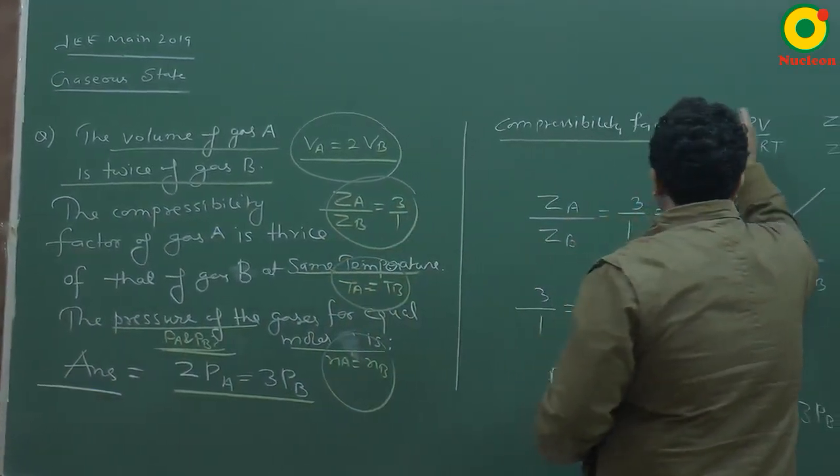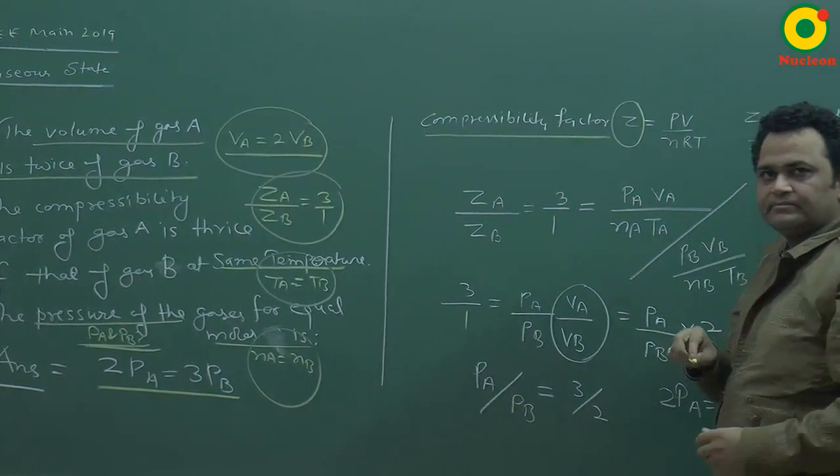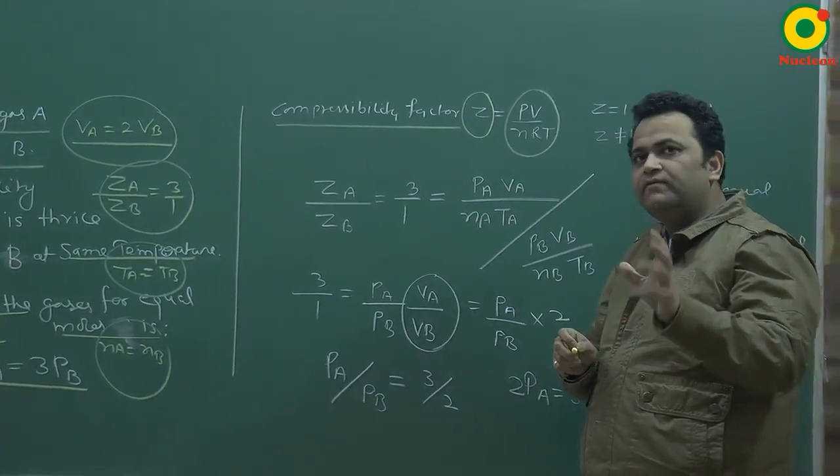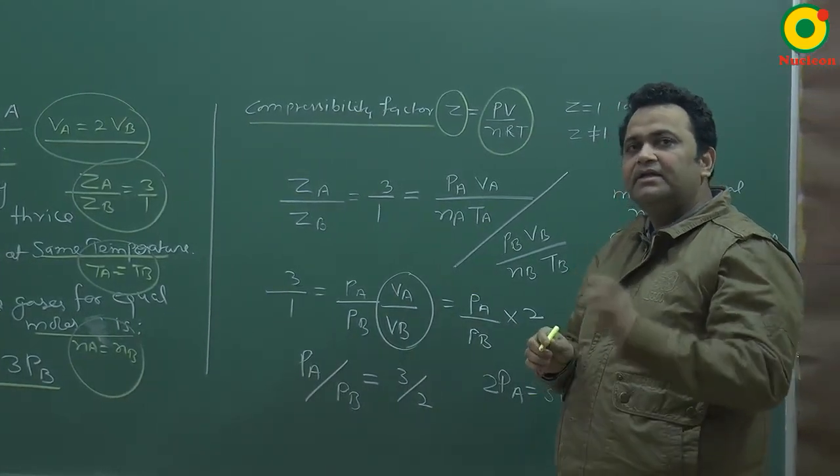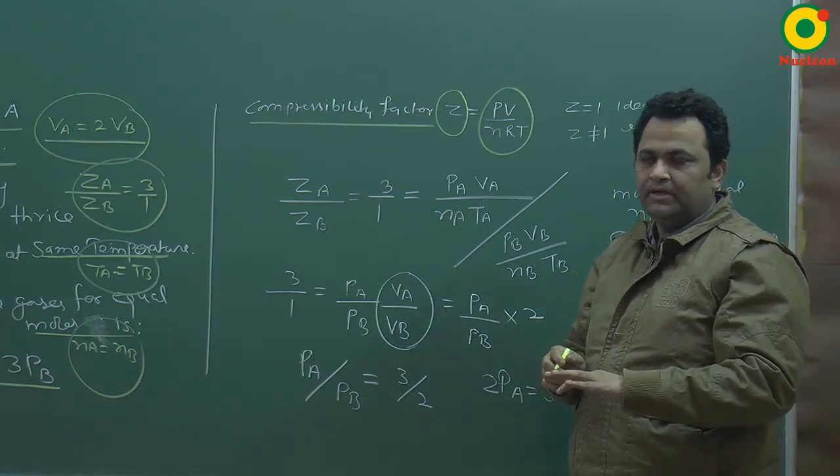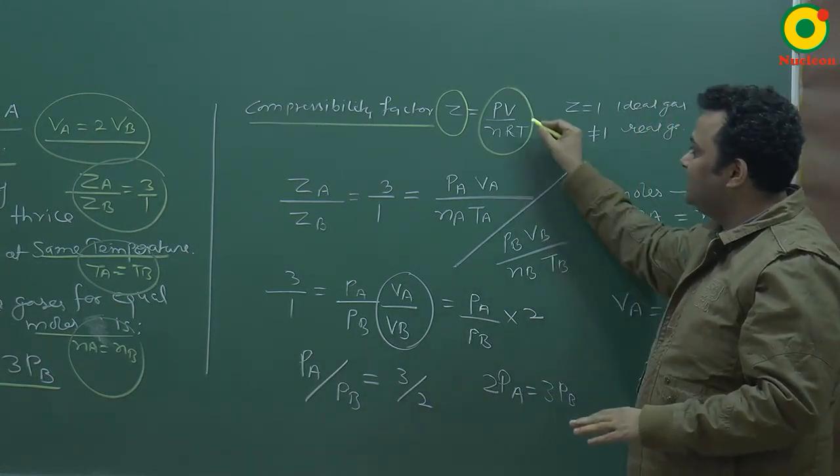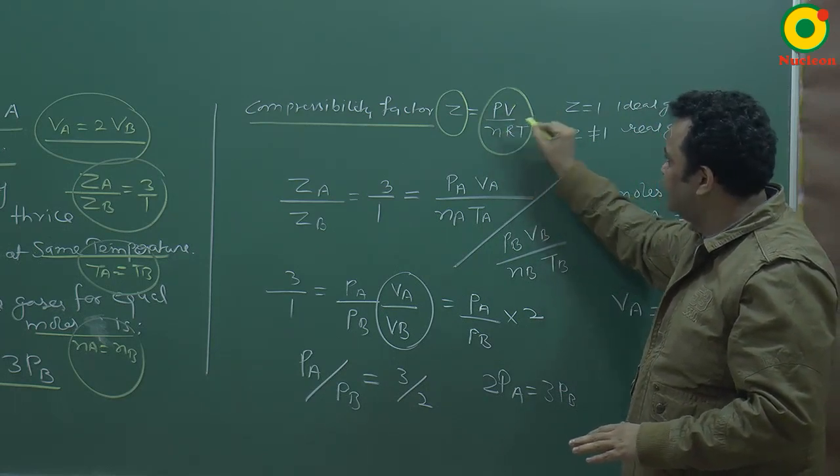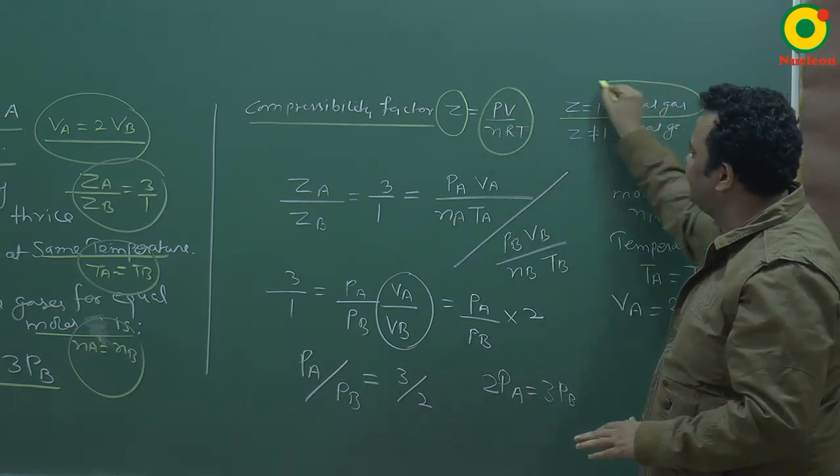Compressibility factor is represented by Z. Z is PV upon nRT. What is the role of compressibility factor? It tells about the nature of gas, whether it is ideal or real. Now actually what happens is if there is ideal gas, then PV is equal to nRT. If Z is equal to 1, then Z is equal to 1 for ideal gas.